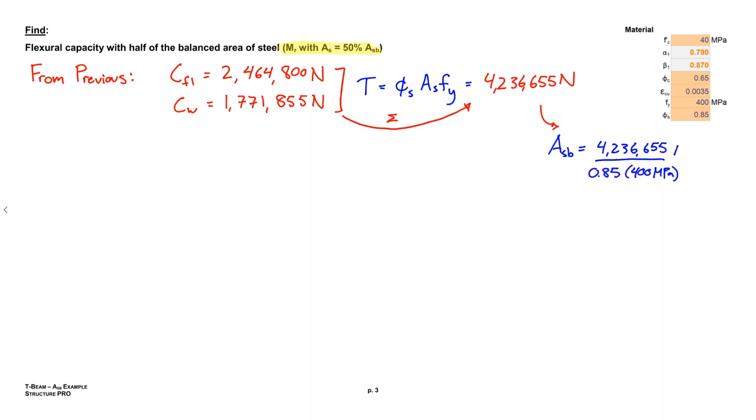But let's go ahead and solve for that balanced area to get a feel for how much steel this actually is. Alright, so if we plug that in, we see that we had around 12,000 millimeters squared of steel, so quite a bit of steel. If we only put 50 percent of that in, then our tensile resultant will be cut in half. So we do the math on that and we got about 2000 kilonewtons, just a bit over. Alright, now here we have to start paying attention. Notice that this new T that we have, this new tensile resultant from all the steel, it's less than CFL, the force in the concrete if the whole flange were in compression.